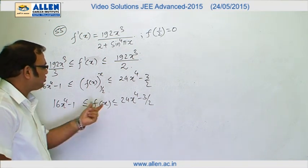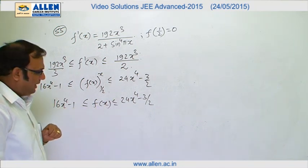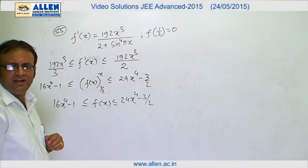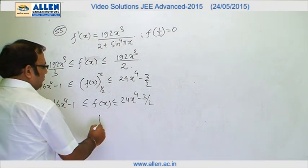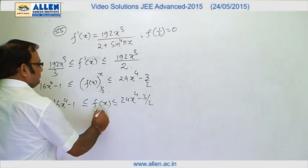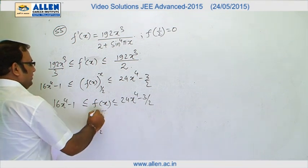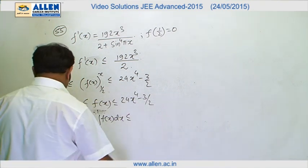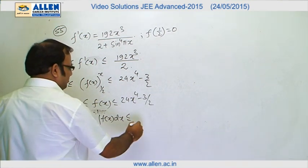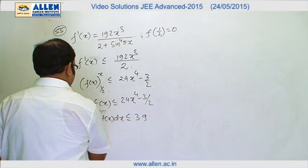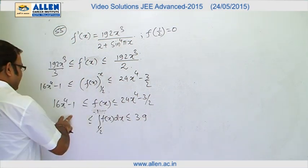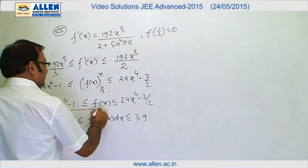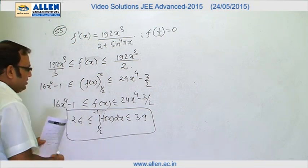So we have found two functions bounding f(x). Now we integrate the entire inequality again from 1/2 to 1. Integrating the upper bound from 1/2 to 1 gives 3.9, and integrating the lower bound from 1/2 to 1 gives 2.6. So the estimate of the definite integral is between 2.6 and 3.9.